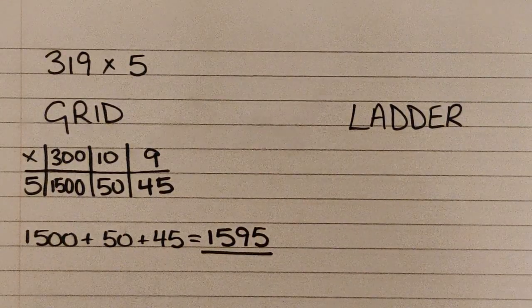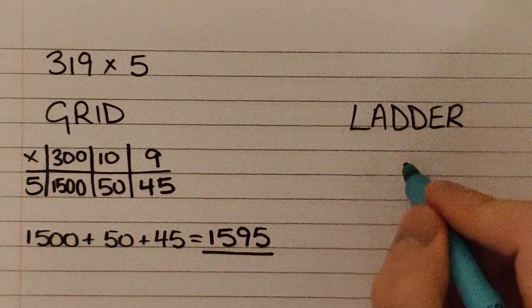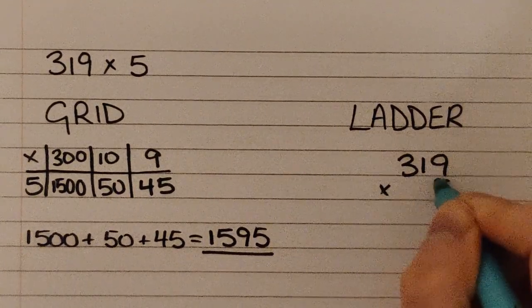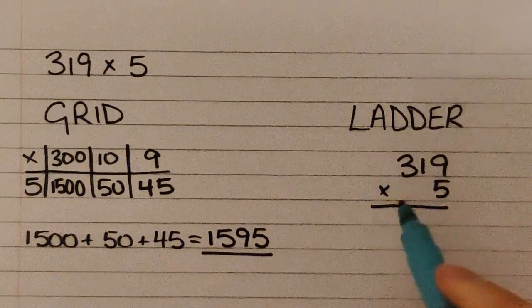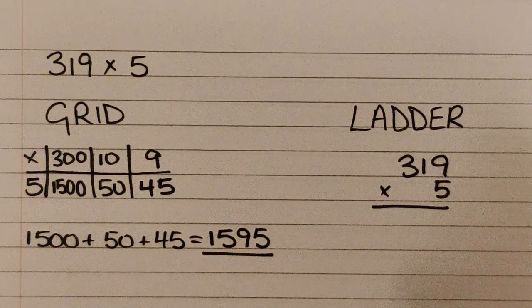That's the grid method, the way you already should know how to do it. But I'm going to show you how to do the ladder method this lesson. We're going to do 319 times 5. We're going to do it exactly the same way but we're going to lay it out in a different way.